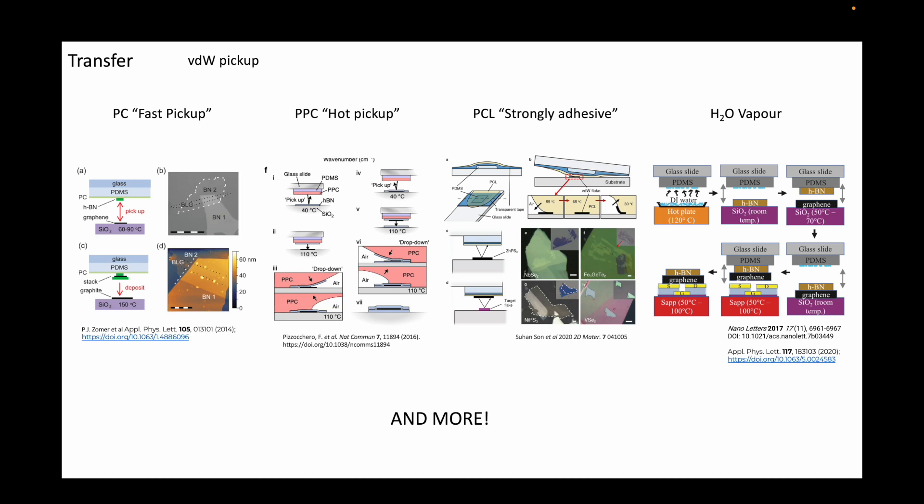The first three are the most common where the thermoplastics such as polycarbonate, polypropylene carbonate, or polycaprolactone attached to a PDMS block are used to first pick up the first flake.